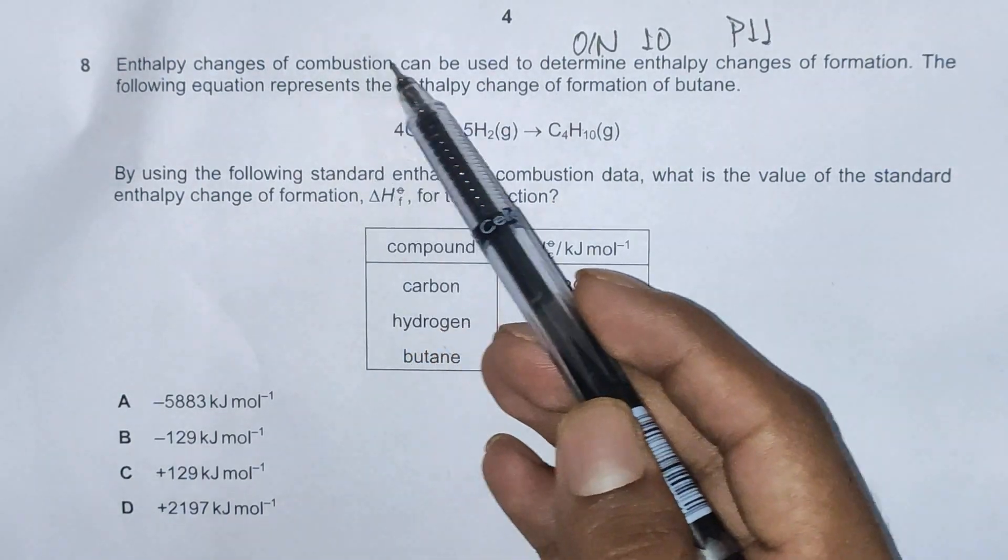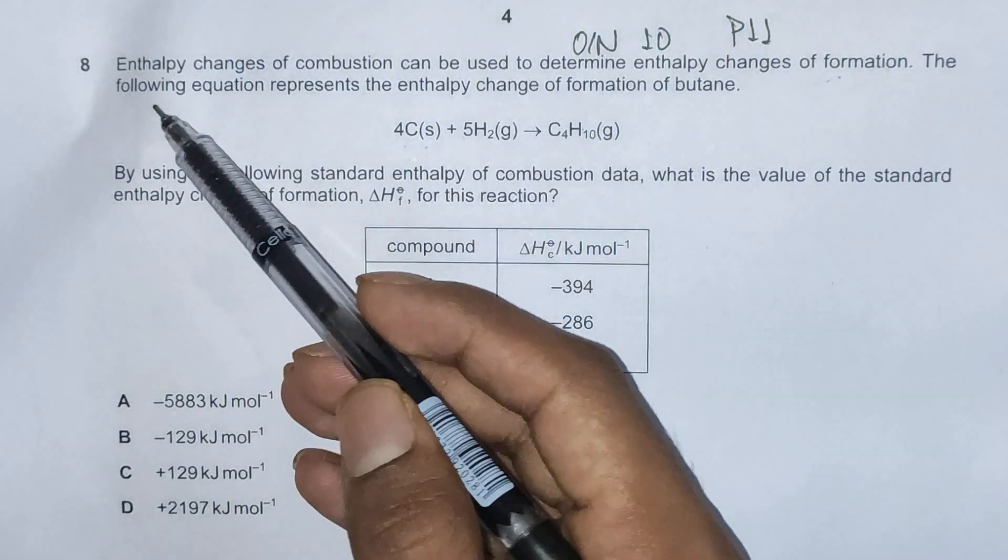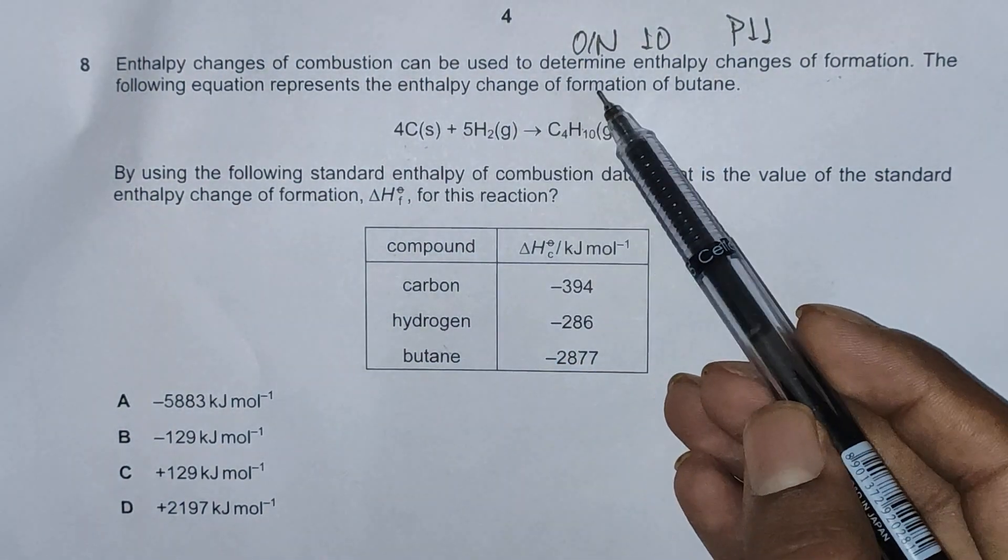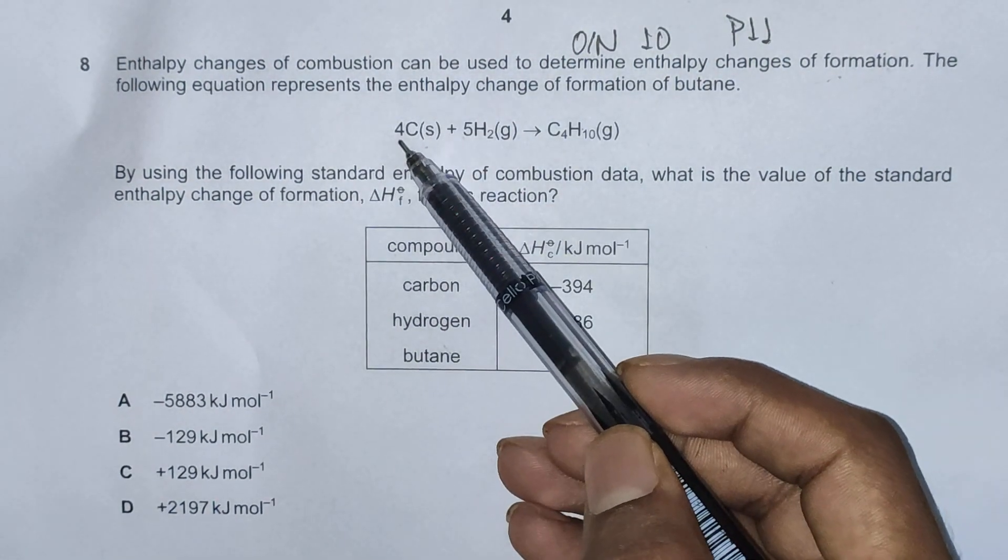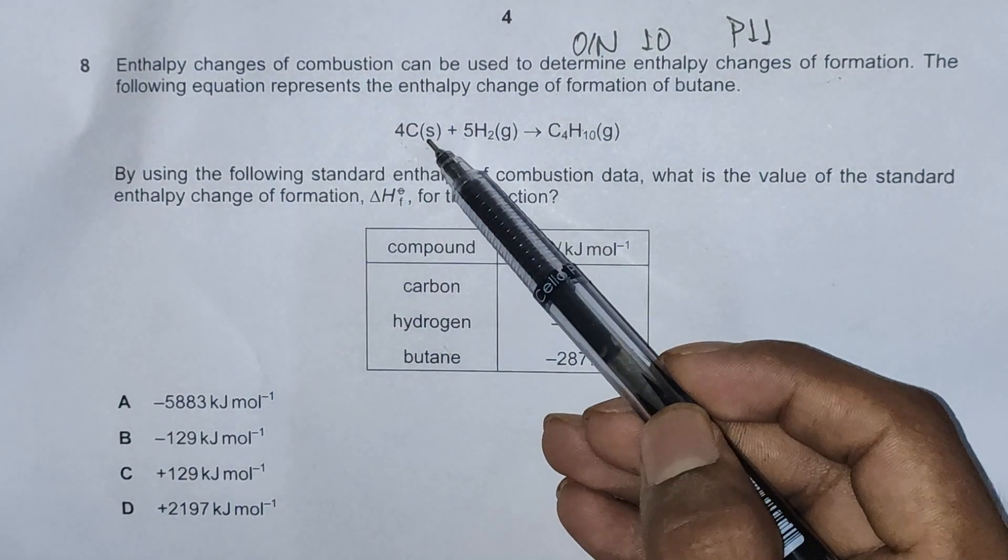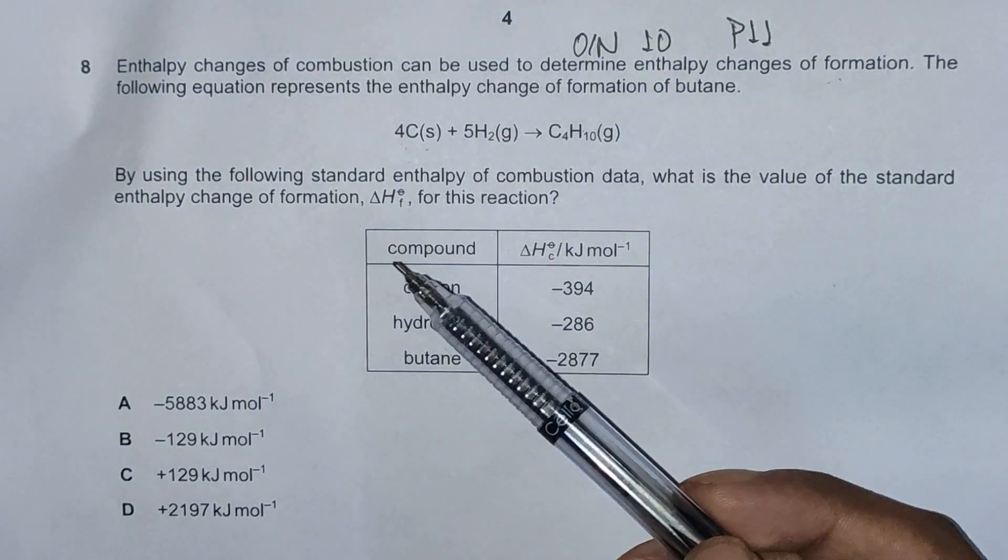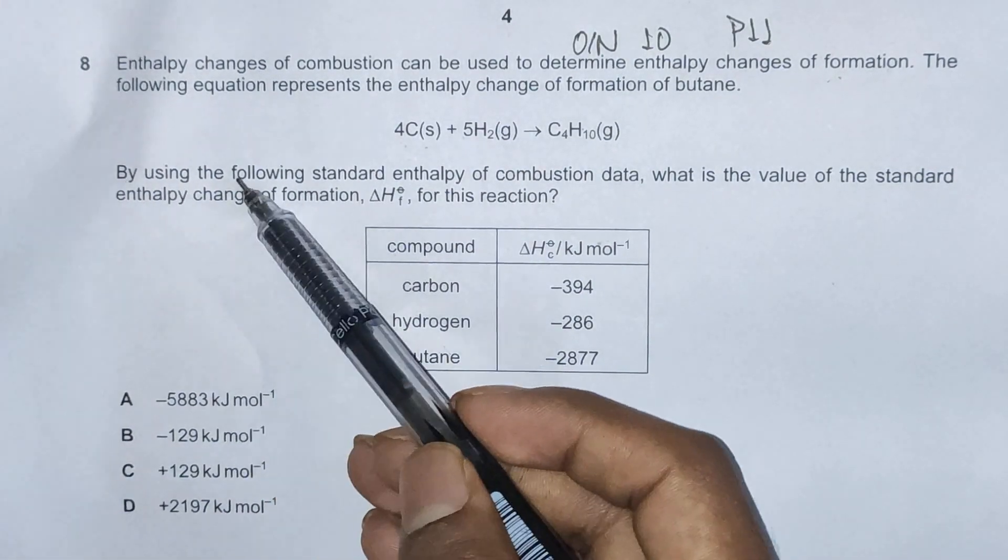The question reads: enthalpy changes of combustion can be used to determine enthalpy changes of formation. The following equation represents the enthalpy change of formation of butane. So we have 4 carbon atoms plus 5 hydrogen gives butane in gaseous state. Carbon is in solid, hydrogen is in gas because that's what they are at 25 degrees Celsius.